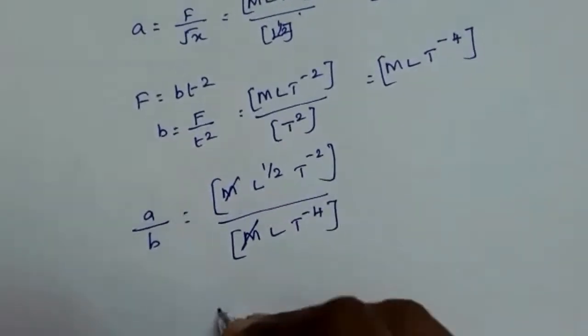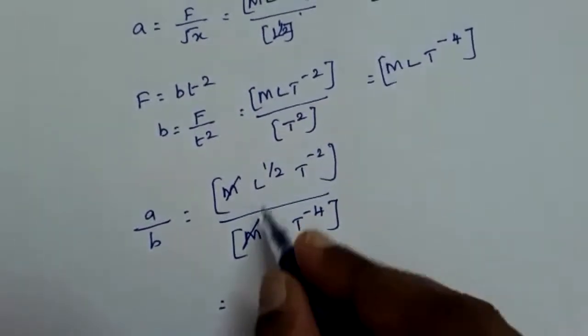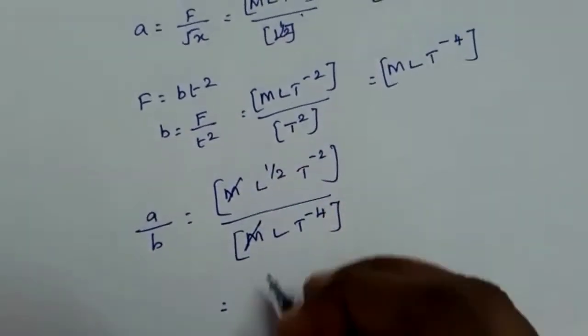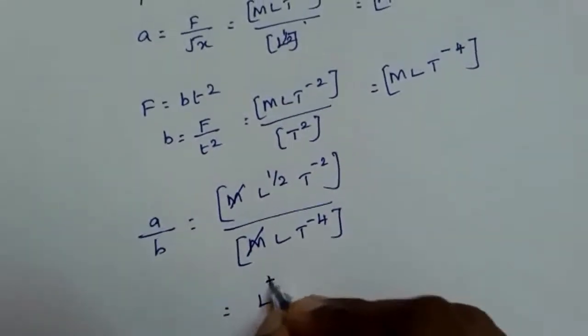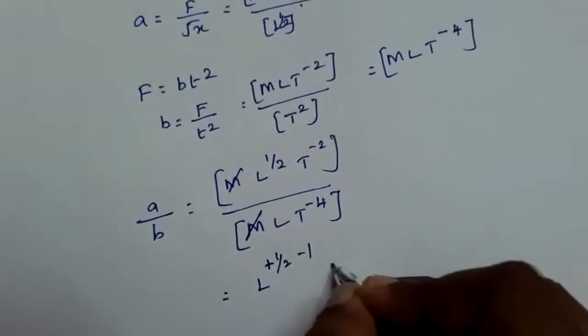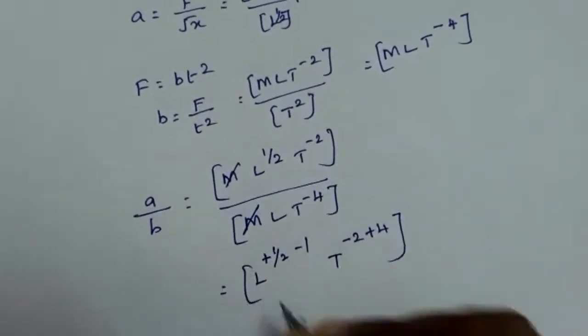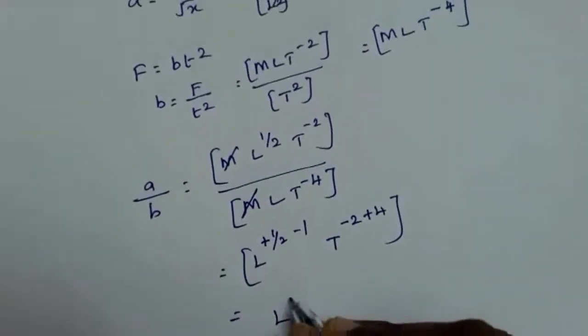So taking half minus 1, it is L^(+1/2-1). Here T^(-2+4). So what will we get here? It is L^(-1/2)T².